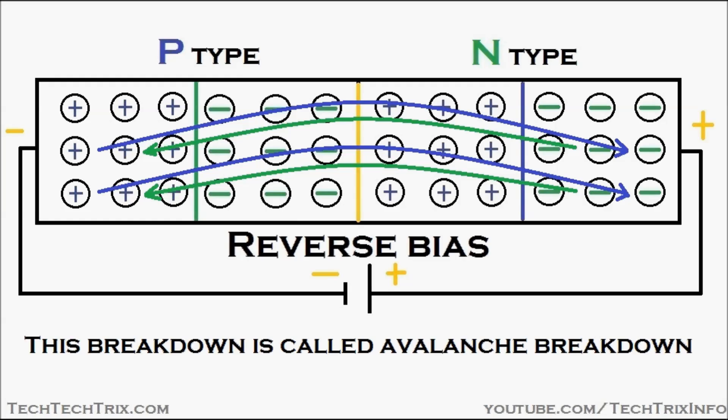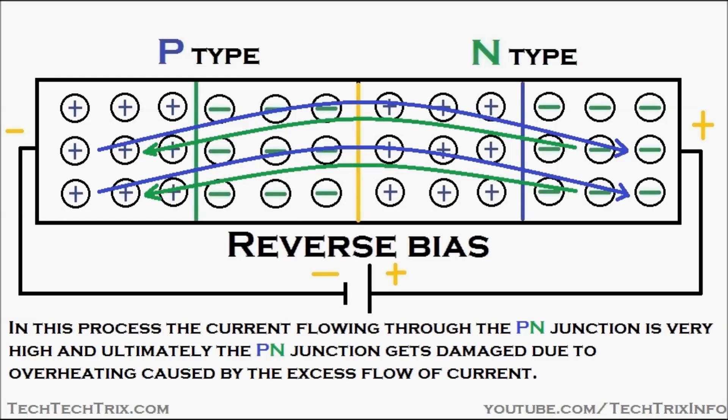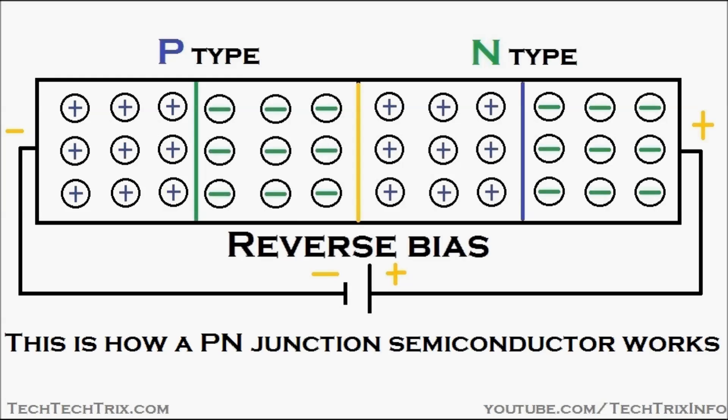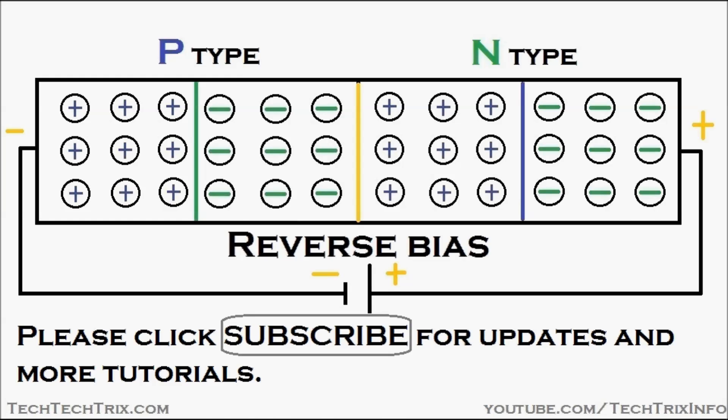This breakdown is called avalanche breakdown. In this process, the current flowing through the PN junction is very high, and ultimately the PN junction gets damaged due to overheating caused by this excess flow of current. This is how a PN junction semiconductor actually works.